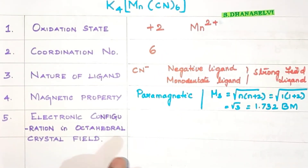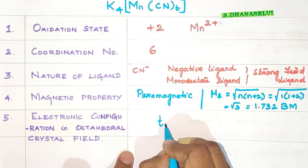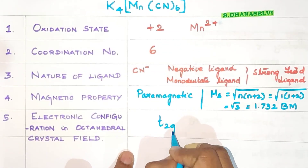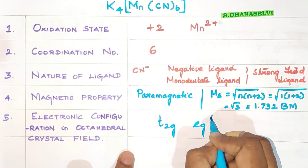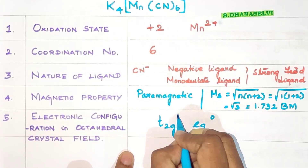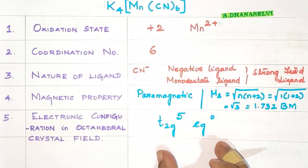So the electronic configuration in the octahedral crystal field is T2g5 Eg0. This is the final answer for the electronic configuration of K4Mn(CN)6 in the octahedral crystal field. Since all 5 electrons are paired in T2g, the complex is diamagnetic.